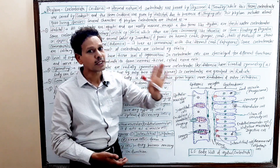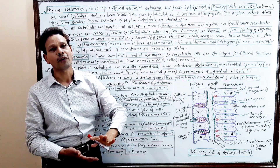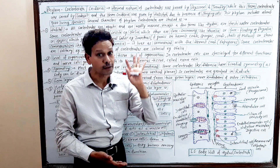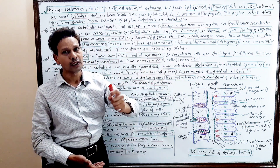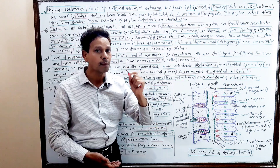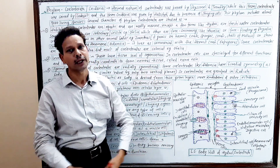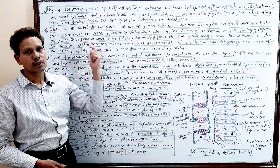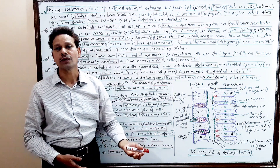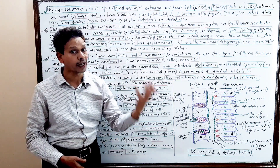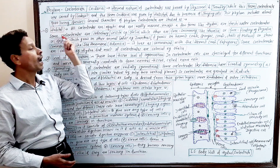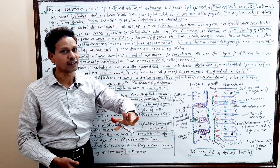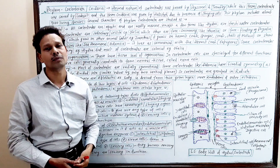This phylum Coelenterata is a very important phylum for all competitive exams as well as B.Sc. students. This phylum includes about 9,000 living species. Some important characteristic features of phylum Coelenterata are studied as follows. Regarding habitat — these are strictly aquatic animals.